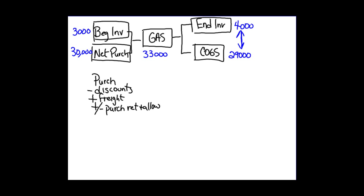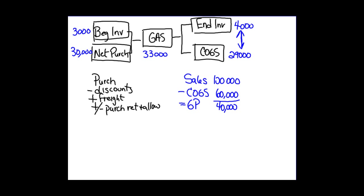The other thing you need to understand is the gross profit percentage. Gross profit is calculated by taking your sales and subtracting cost of goods sold. For example, if sales are $100,000 and cost of goods sold is $60,000, our gross profit is $40,000.